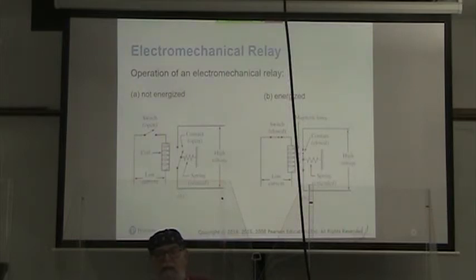And an electromechanical relay in A we see that it is not energized. The switch is open. There's a coil here. The spring holds open the contacts. When the circuit is energized, we close the switch. That creates a magnetic force in this coil that pulls the switch closed in the high voltage circuit.